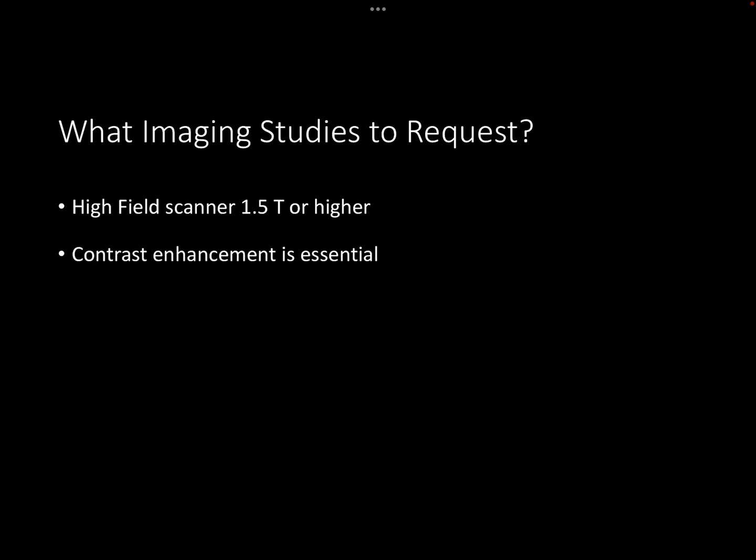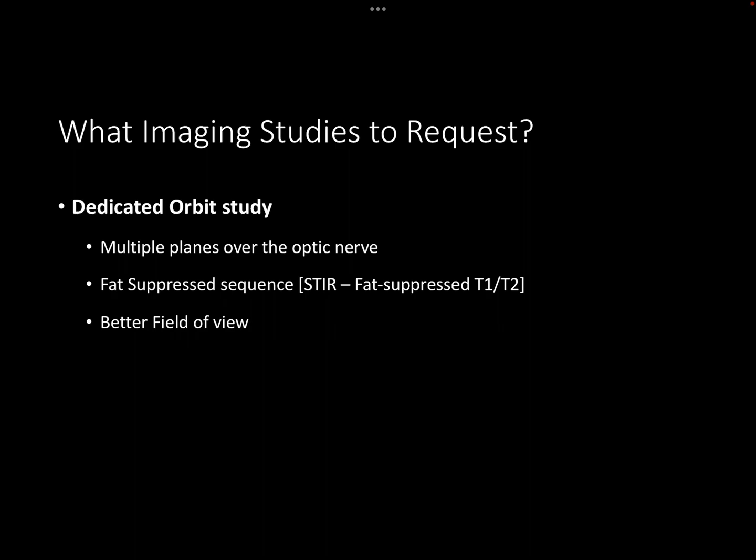Now comes the question of what images exactly you should look for. Before everything, you need to make sure you are referring to an MRI scanner with 1.5 tesla or higher. You need a high-field scanner and contrast enhancement because you are approaching an inflammatory condition — contrast enhancement is essential. You need to ask for a dedicated orbit study, which implies applying multiple planes particularly along the optic nerve, and you need a fat-suppressed sequence because the orbit is full of fat, which looks bright in both T1 and T2. You need a good field of view focused on the orbital compartment, as the optic nerve is very thin and easily missed without a dedicated study.